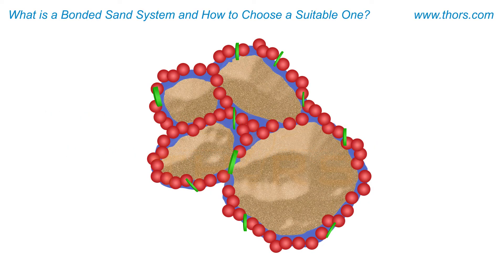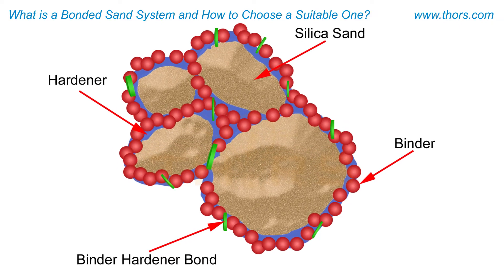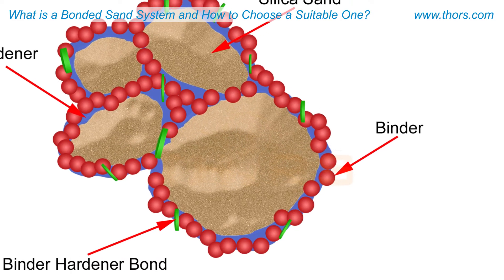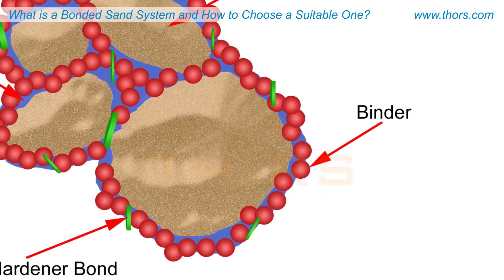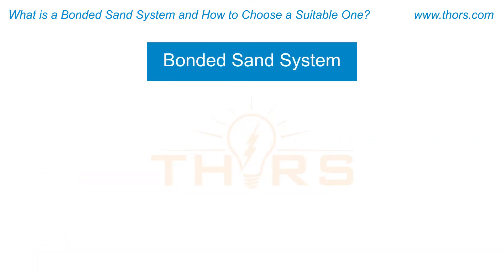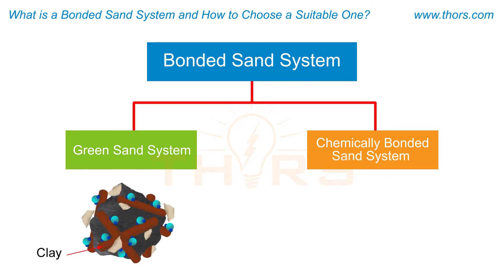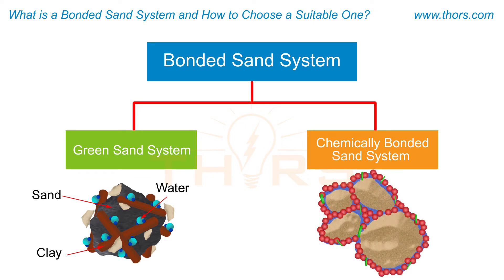A bonded sand system consists primarily of silica sand, a binder, and other additives. The binder is a material that binds the sand aggregates and gives a rigid shape to the mold. Depending on the binder used, the bonded sand system is classified as a green sand system or a chemically bonded sand system. A green sand system uses clay and water to bind the sand aggregates, whereas a chemically bonded sand system uses chemical binders and hardeners.